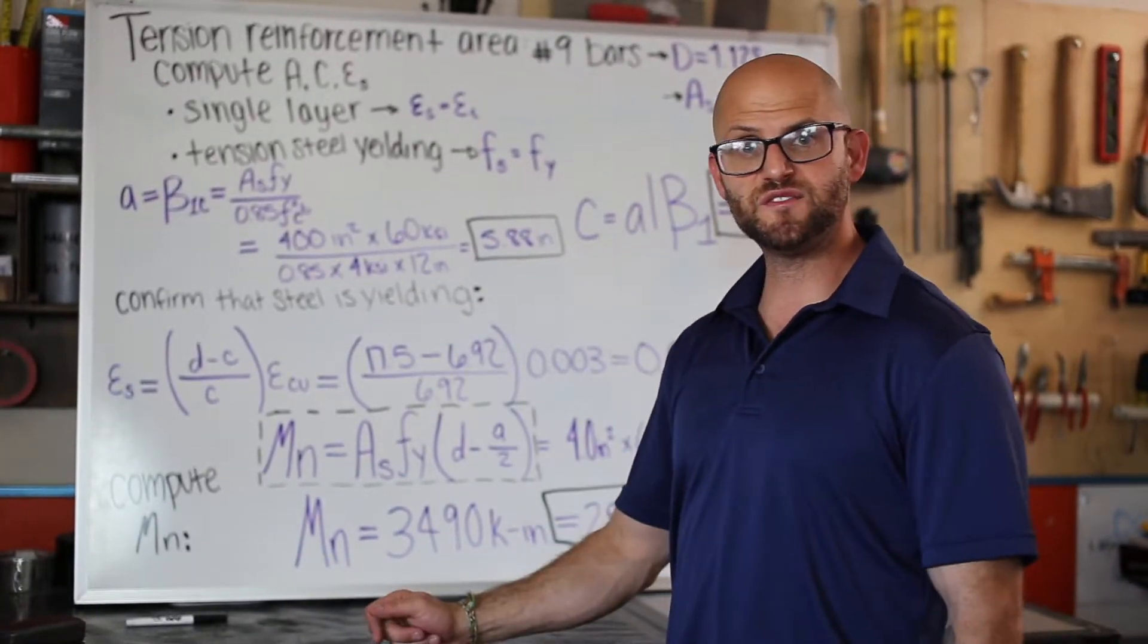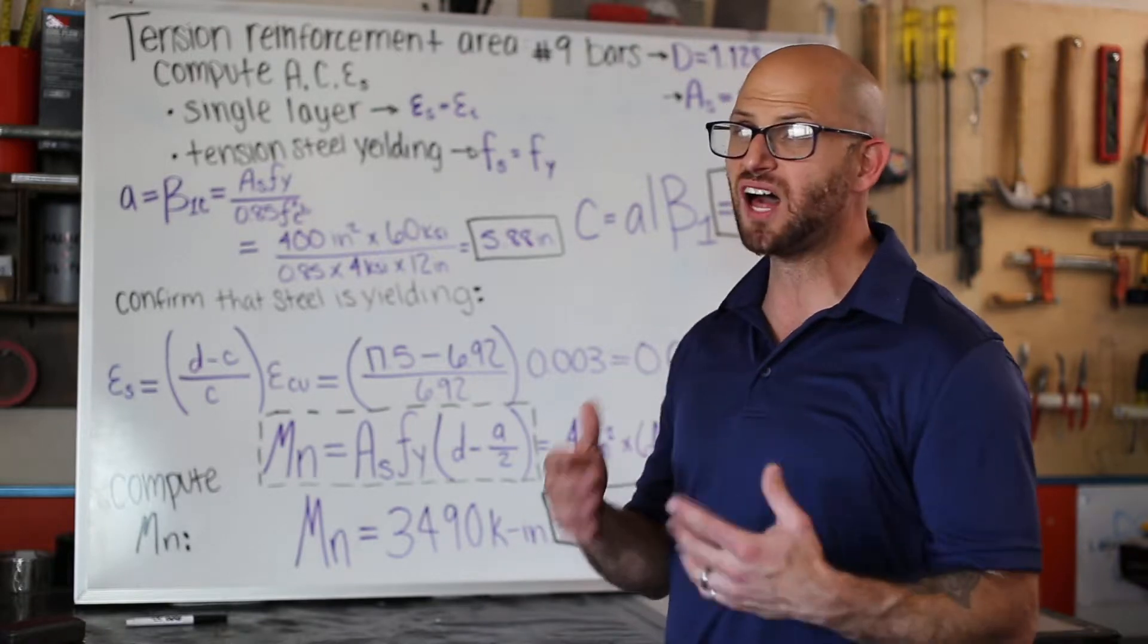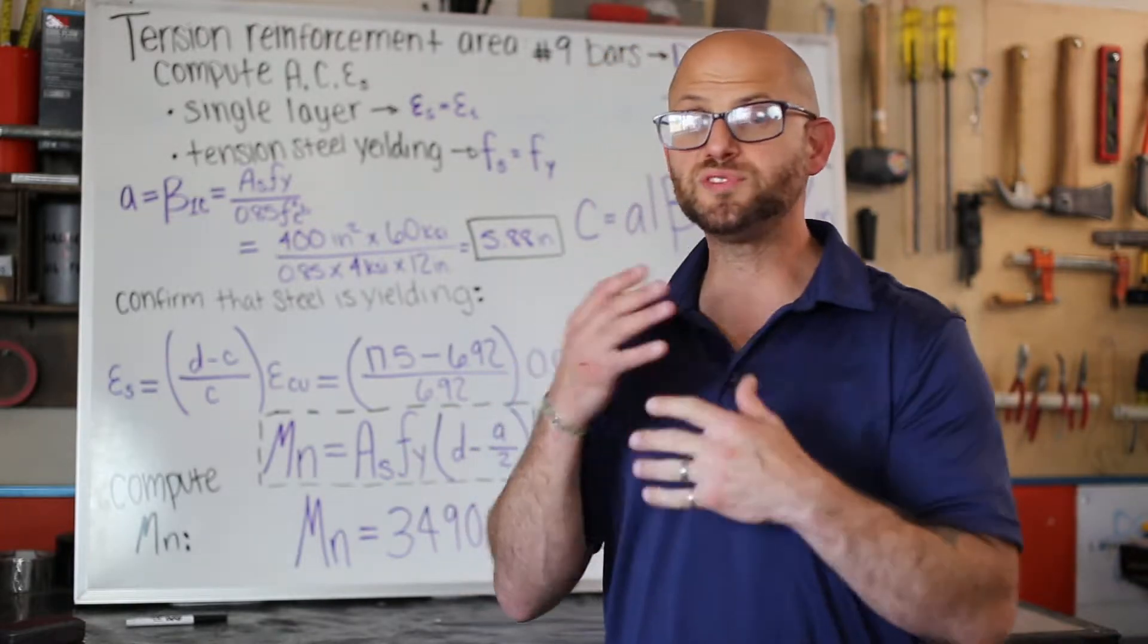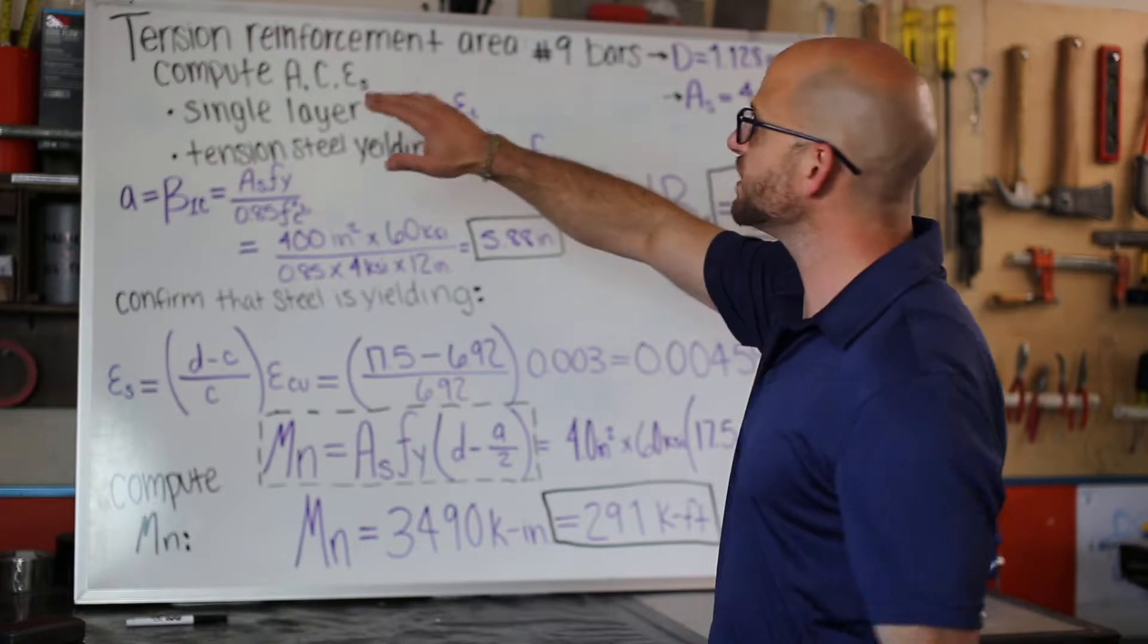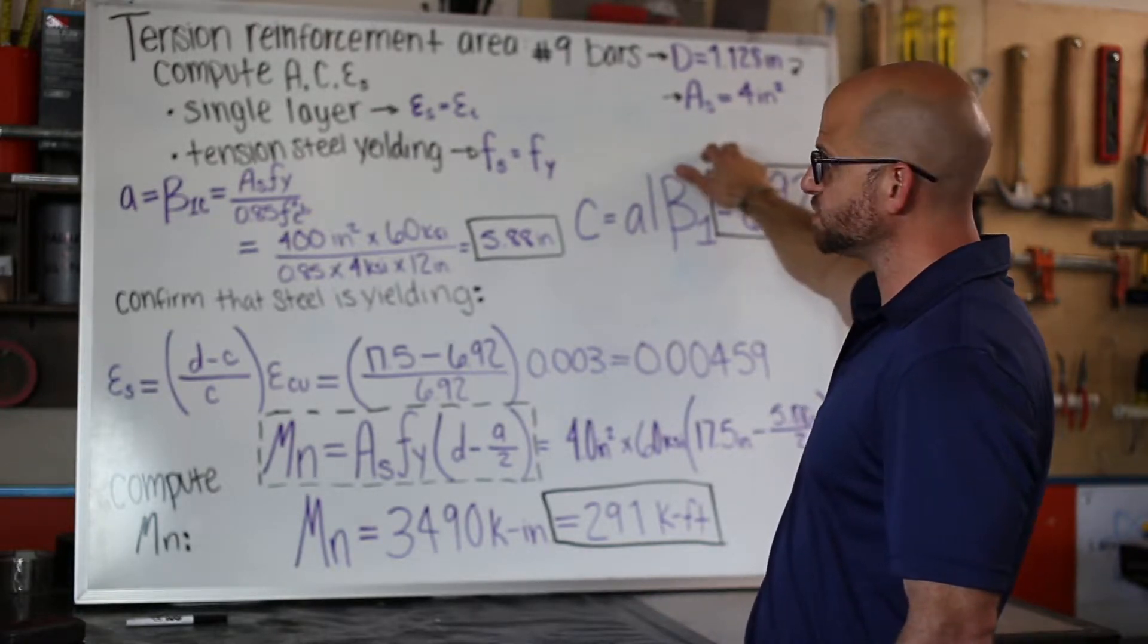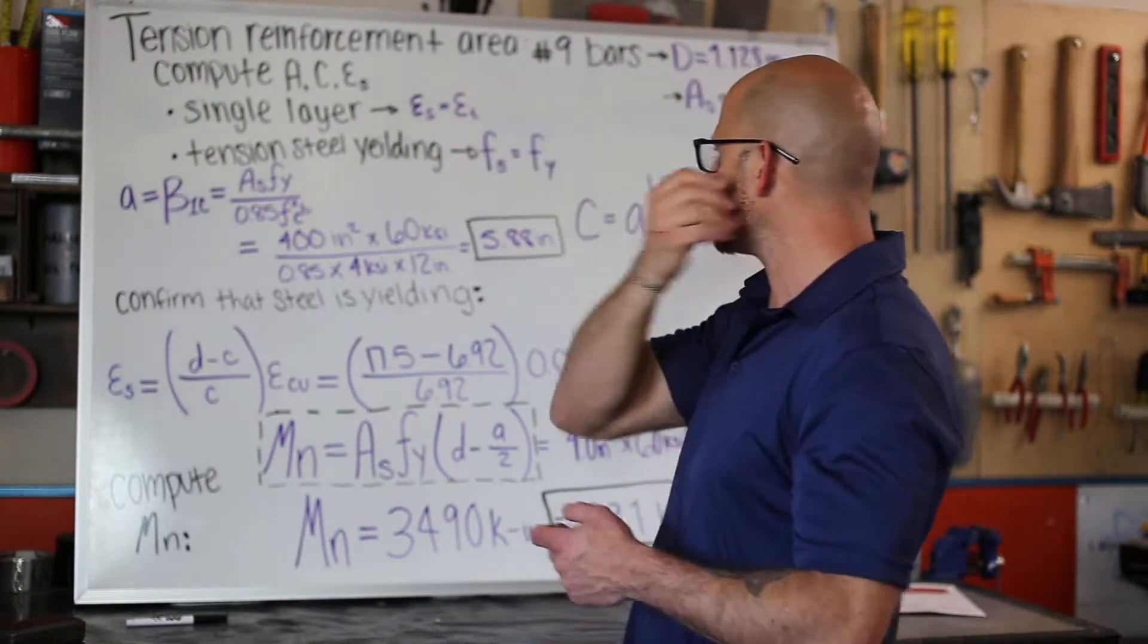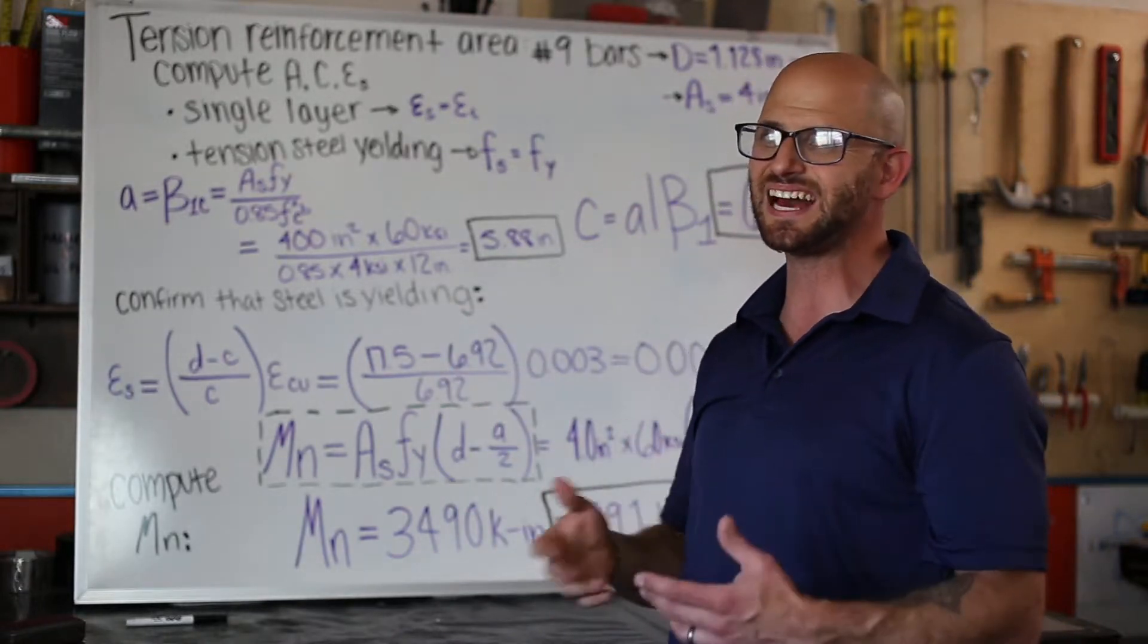This is the third and final board where we're going back in time to calculate that moment capacity. There's a lot involved here, and it's actually balancing the geometric design, the concrete strength, and the area of steel. We're doing an abridged version. We know we have four number nine bars, so we have an area of steel of four inches squared. We have a single layer, so our failure strain εs = εt. We have tension steel or yield steel fs = fy = 60,000 psi.